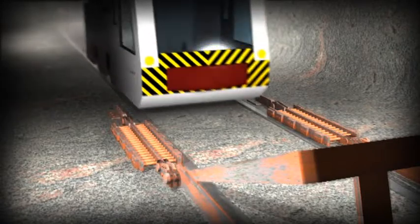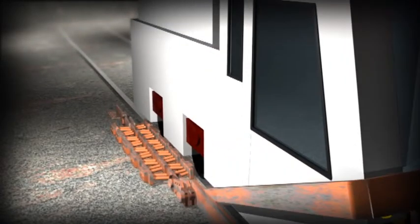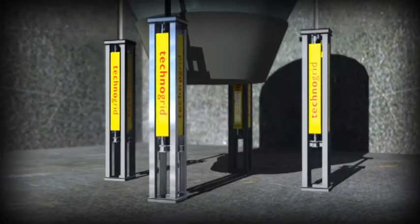Technogrid is a strain energy absorption device which absorbs the energy of a moving object by deforming a metal grid of known design and characteristics through stroke deformation of predicted value.